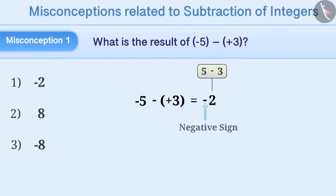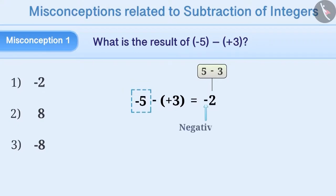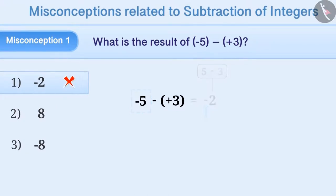Similarly, sometimes 3 is subtracted from 5 and the sign of the first number, that is minus 5, is placed before the result. Because of these two misconceptions, option 1 is chosen as the answer, which is incorrect.